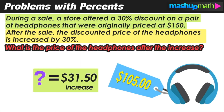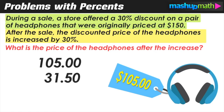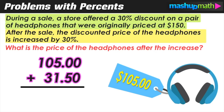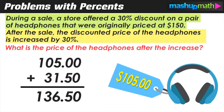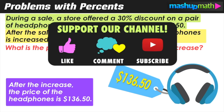That $31.50 is the increase. To find the final price after the increase, we find the sum of $105 and $31.50, which is $136.50. We can conclude that after the increase, the price of the headphones is $136.50, and we've answered the question.